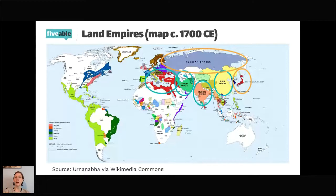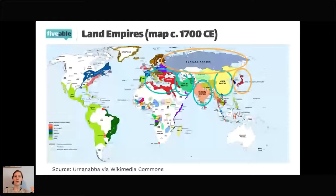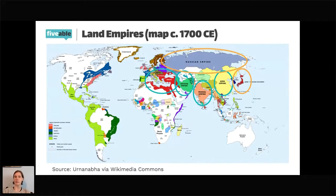The Byzantine Empire falls in its final stages in the early 1450s, so it's technically in this time period but functionally belongs more appropriately in the previous time period. At the beginning of this time period, we do still have powerful land empires in the Americas — particularly the Aztec Empire in Mesoamerica and the Inca Empire in the Andes. They aren't shown on the 1700 map because by then those empires had been overtaken by European powers.